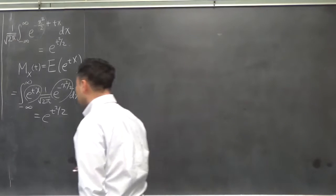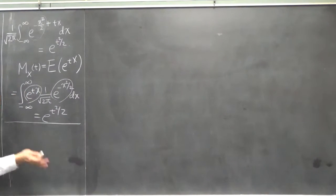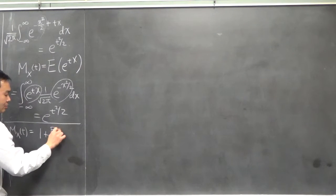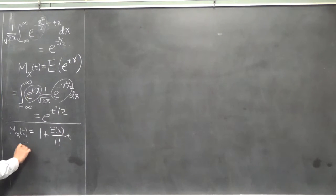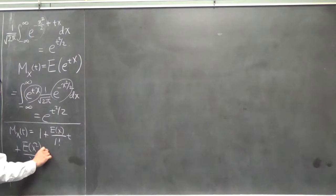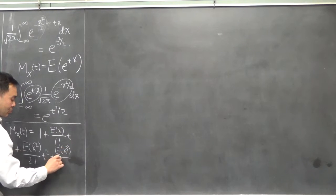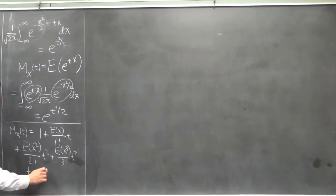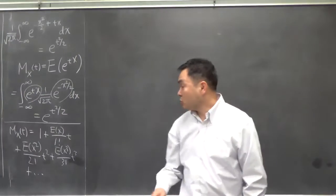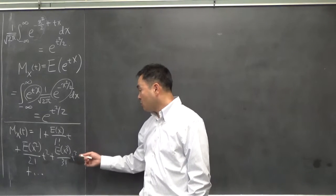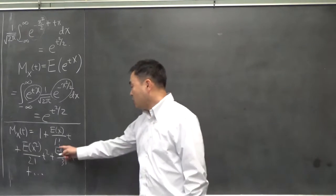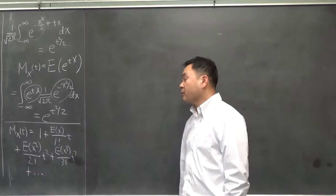In addition, we also learned a few lectures ago that there are moments, so if you have M_X(t), you can write this as a Taylor series of moments. So the very first one is 1 to begin with, but then you have E(X) divided by 1 factorial times t plus E(X²) over 2 factorial times t² plus E(X³) over 3 factorial times t³, and so on. And actually, this is why we like the moment-generating functions, because once we know them, we can just keep differentiating and plugging in 0 to find all the values of E(X^n), which are called the moments.